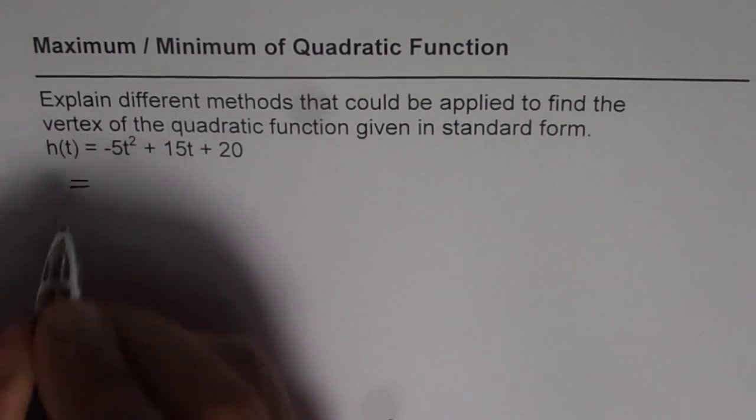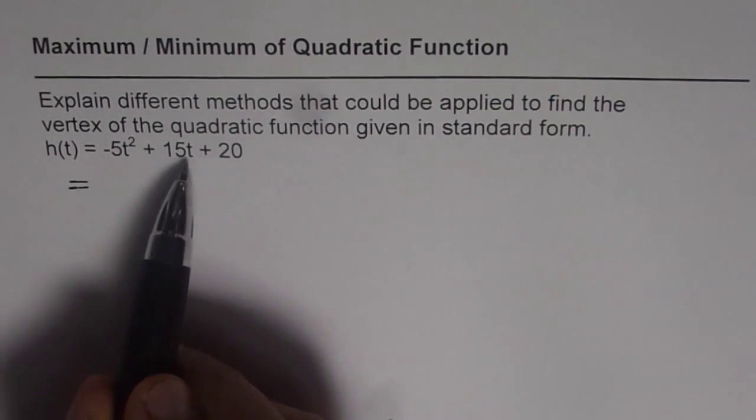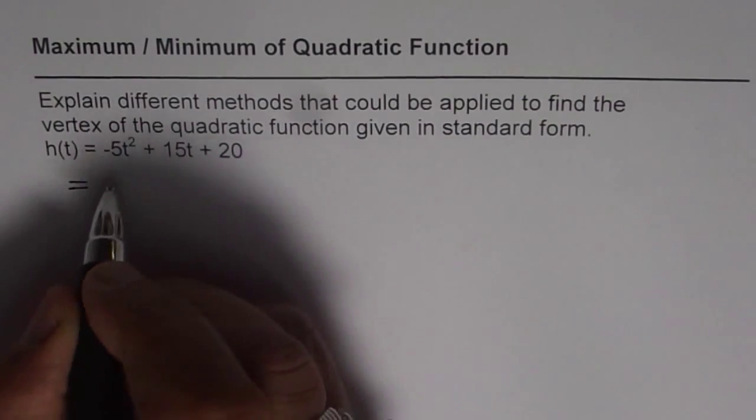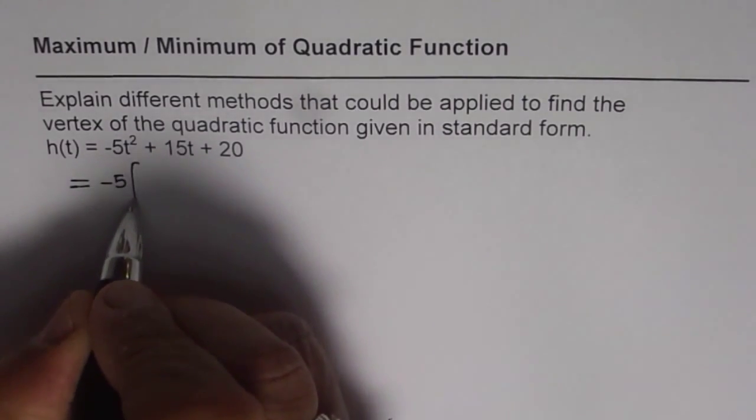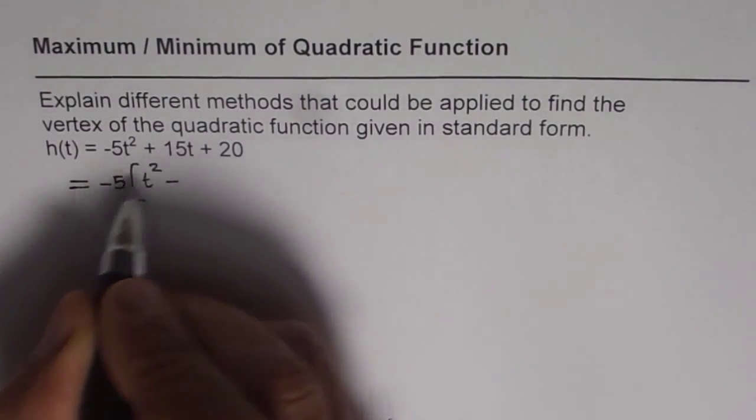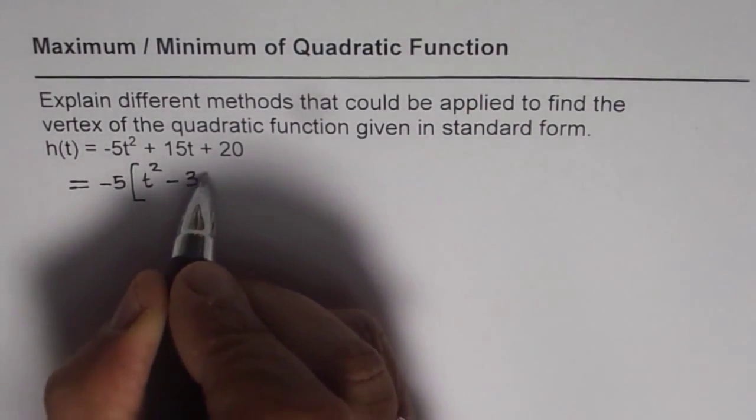Now in completing the squares, we actually take the first two terms and factor out the constant. So the constant here is -5 and what remains is t² - 3t.